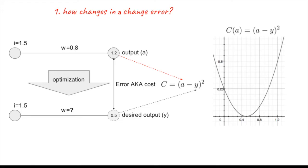More formally, let's look at the error function we are trying to minimize. This is a plot of the error function as a function of the output activation. With the current output activation of 1.2 and an error of 0.5, we need to decide how to change the output activation to minimize the cost. This is where the term gradient descent comes from — we are descending along the cost function in the direction of the negative gradient in order to get down to the minimum where the error goes close to zero.